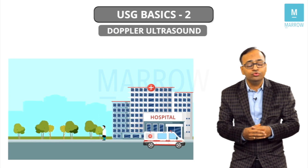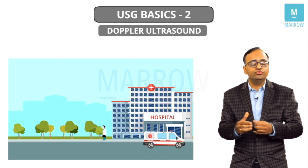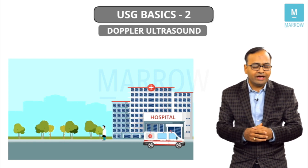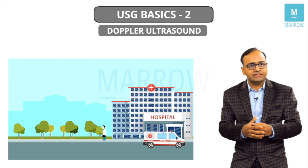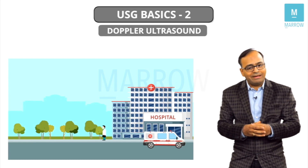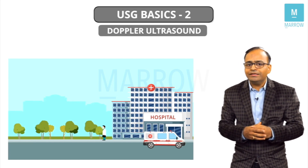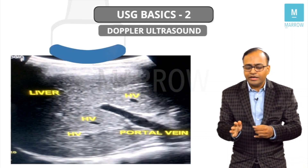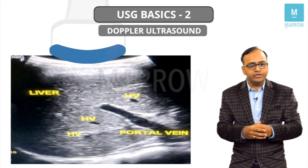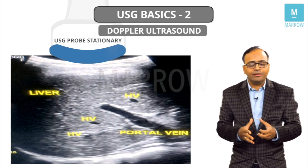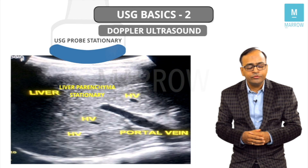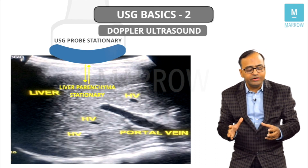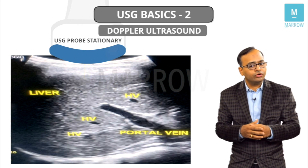How is this Doppler effect used in ultrasound? It is used in an application called Doppler ultrasound. Imagine we are doing a USG abdomen. When scanning the abdomen, you keep a probe on the surface of the body. This probe is stationary. The liver parenchyma is also not moving. So if a pulse is emitted and an echo is received, there is no relative motion between them, and the Doppler effect will not occur.